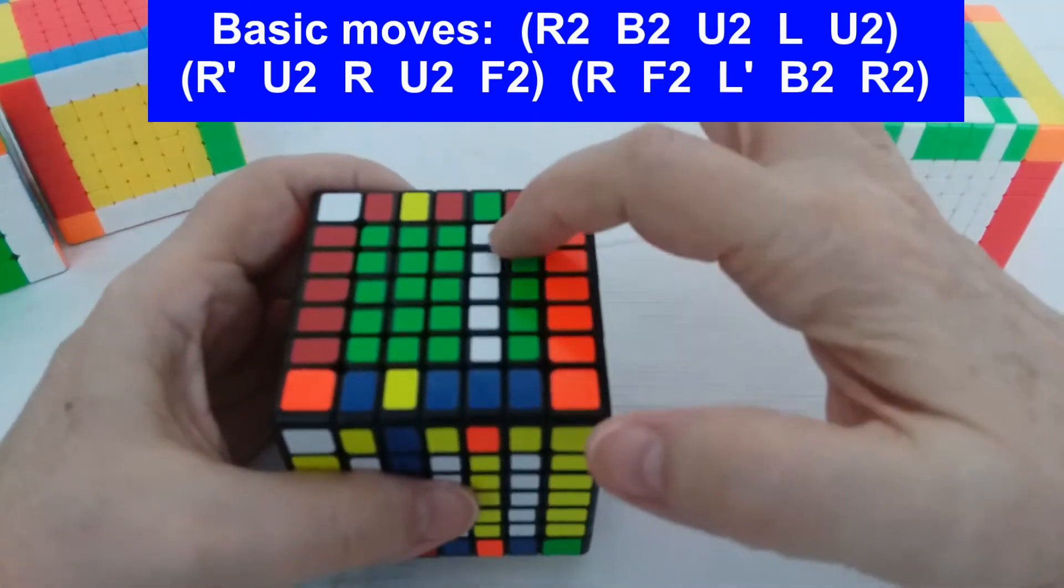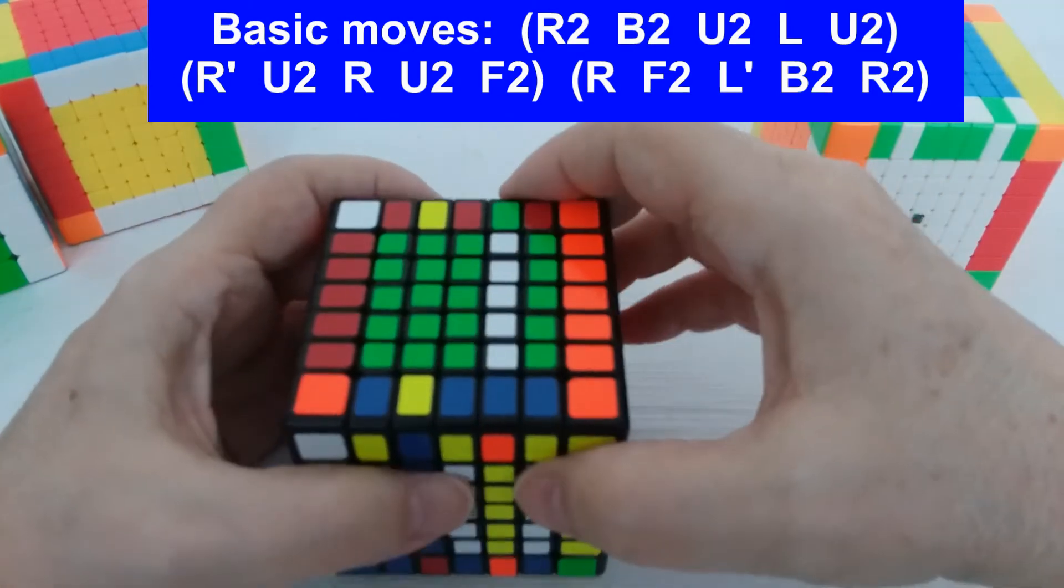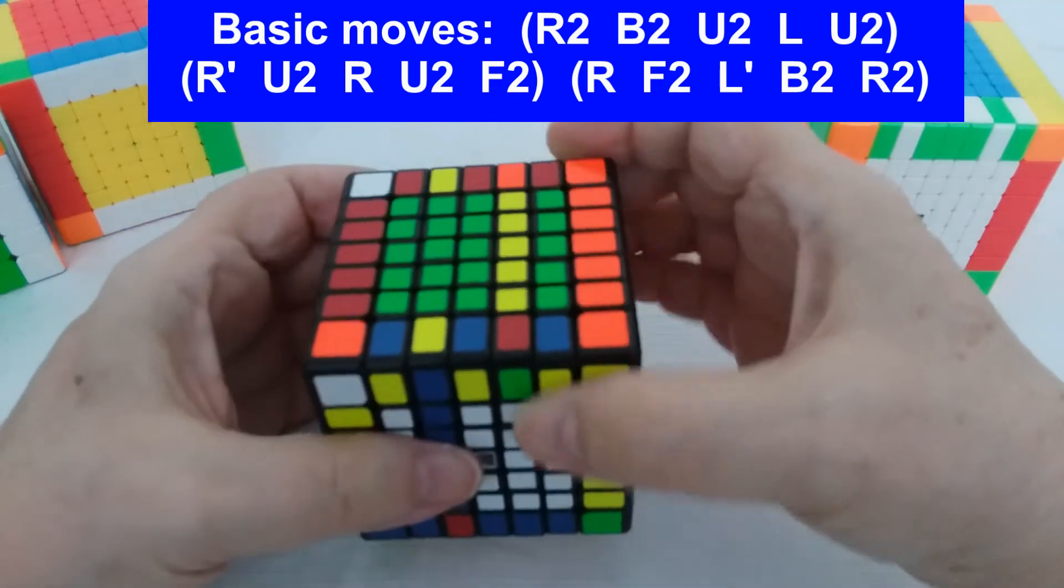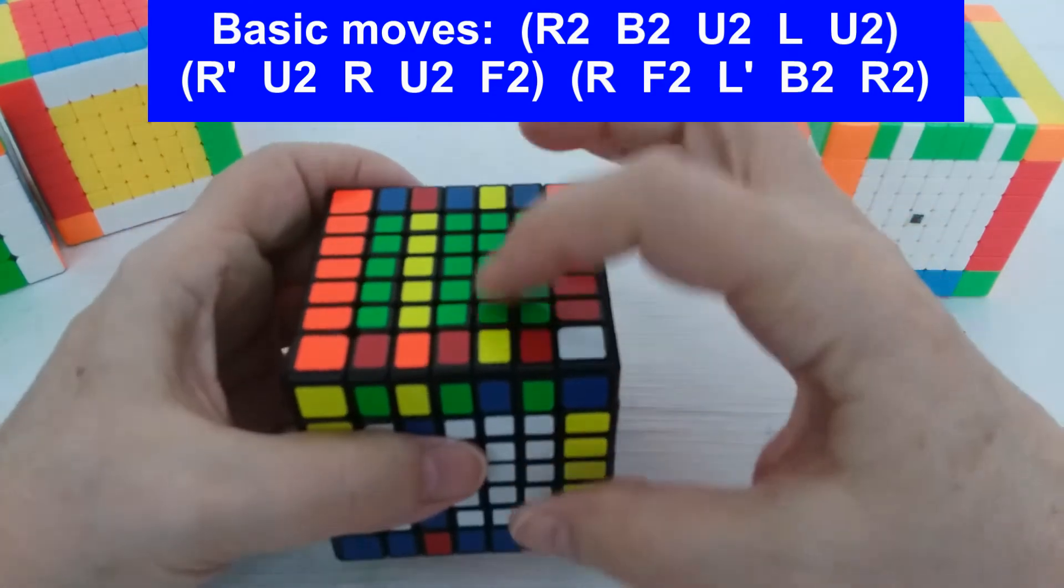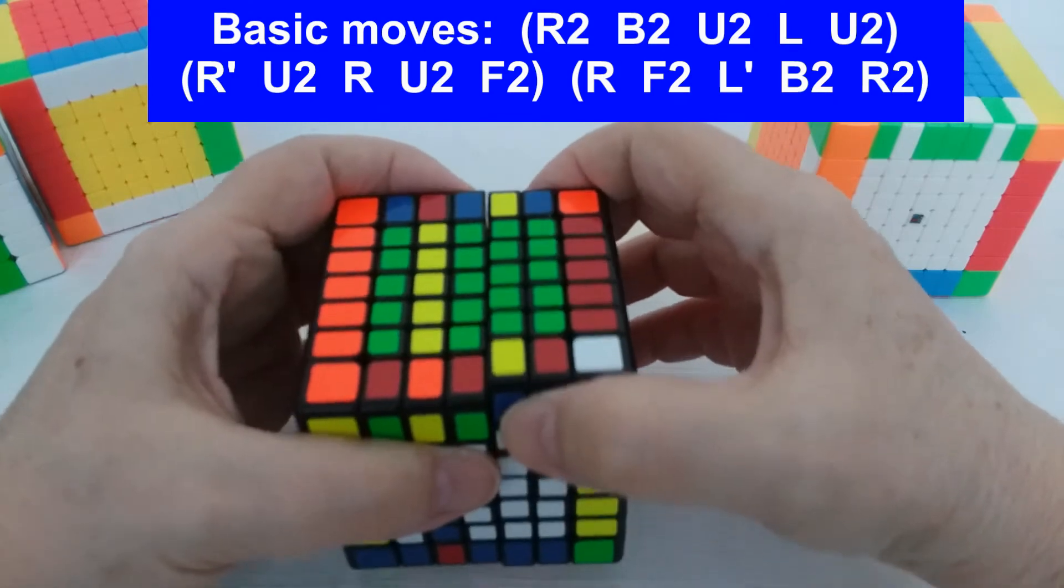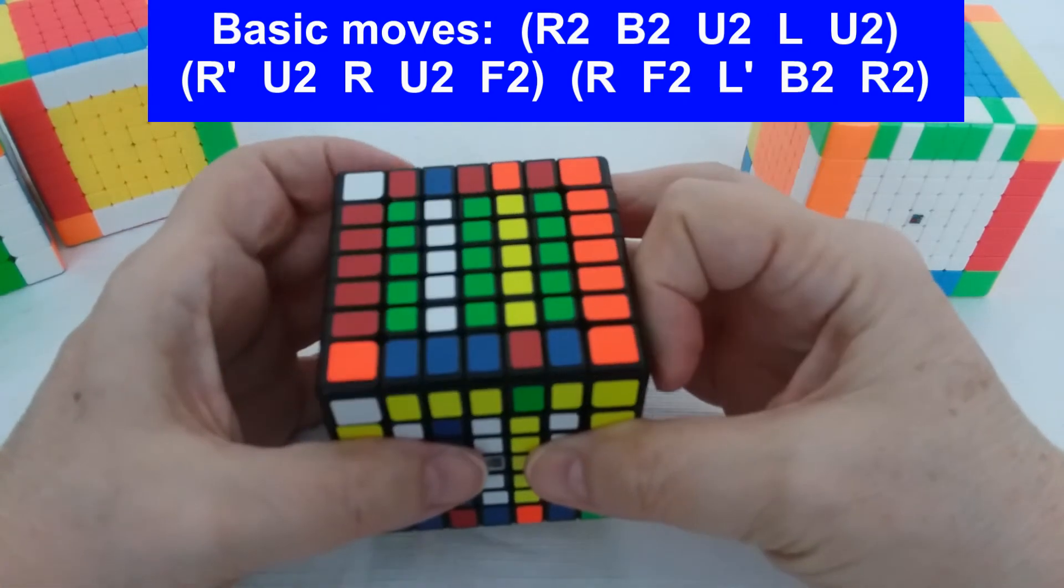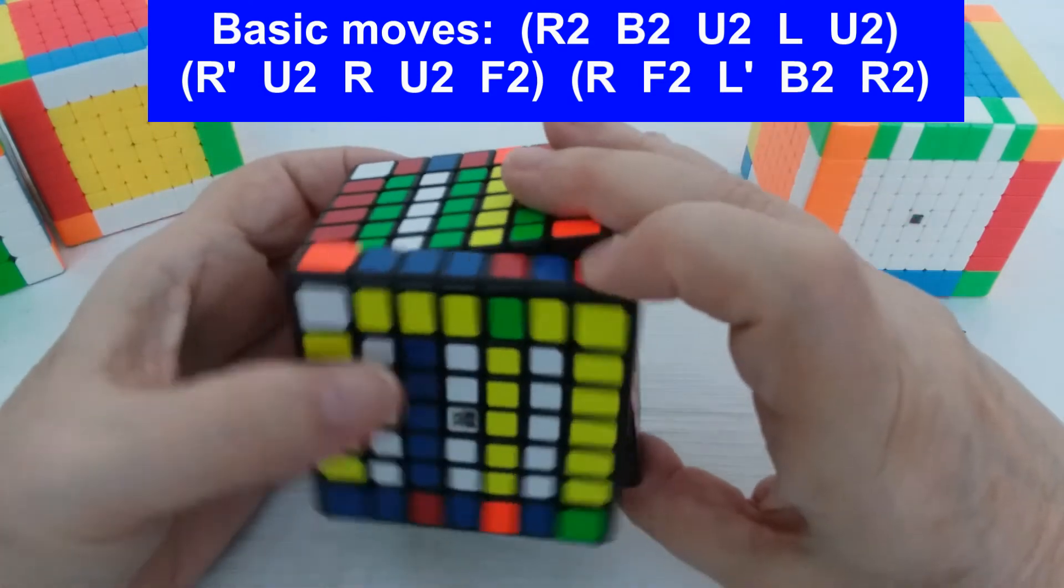The next one, then we do R toward me - so it's just this one and I'm going to do this way, just one, that's easier - U2, and R away, it's just that one, move it away, U2 and F2.